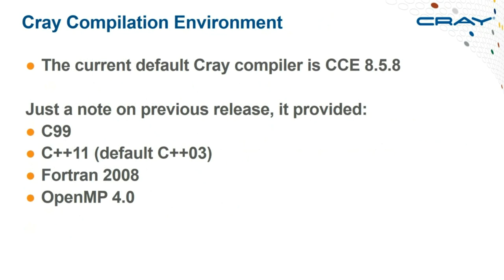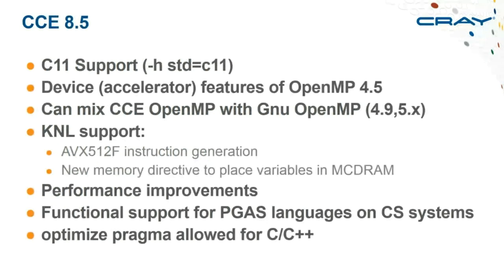Now I'll go through components of the environment and describe what changed. Starting with the oldest: the current default Cray compiler is CCE 8.58. Before CCE 8.5, the compiler supported C99, C++11 with C++03 as default, Fortran 2008 (supported since around 2012), and OpenMP 4. That was the baseline before CCE 8.5 arrived.